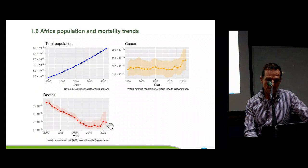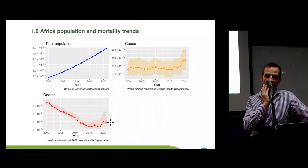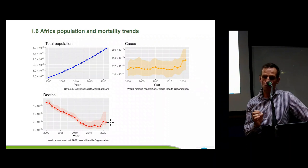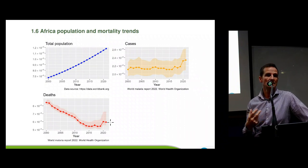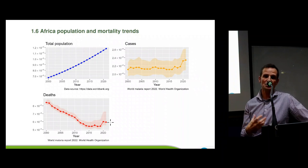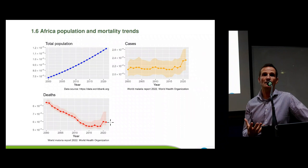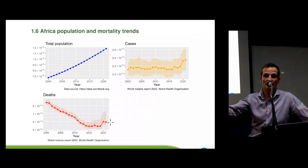Worryingly, if you look at this little upturn on the right-hand side of both these figures, cases of malaria and the number of deaths seem to be rising again. There are quite a few reasons for that. The impact of COVID on the existing health system is partly to blame. But also many of the mosquitoes and the malaria parasite itself are becoming resistant to the drugs and chemicals used to control them. So there's a big push now through the WHO, funded largely by the Gates Foundation, to find new ways to control malaria in Africa.